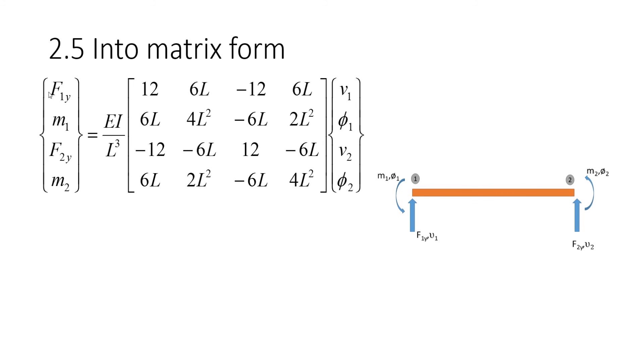We get a matrix like this: vertical force at node 1, moment node 1, vertical force at node 2, moment 2, equal to Young's modulus E times the moment of inertia I over the length of the beam to the power of 3. Then you get the expressions which we derived in the previous slide. Now this is the stiffness matrix.